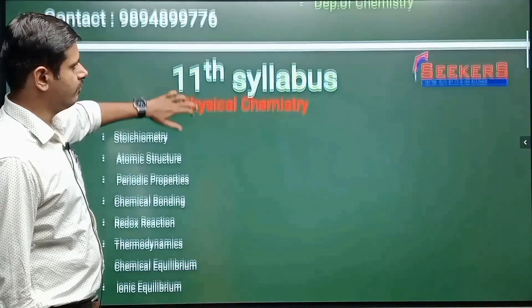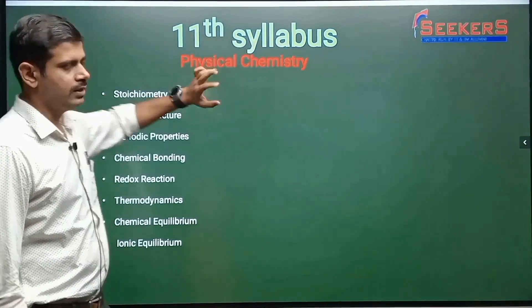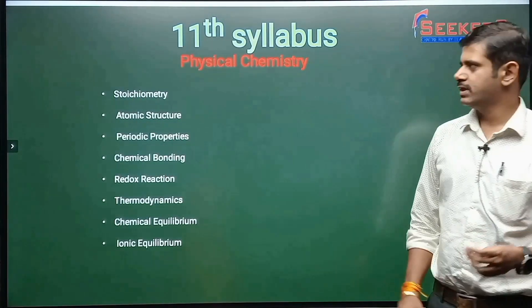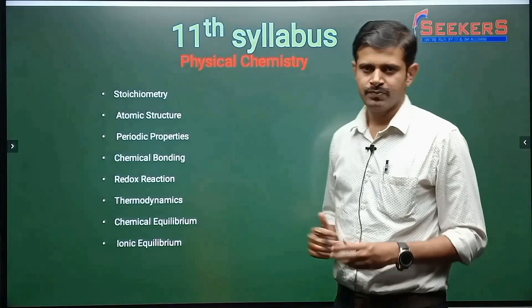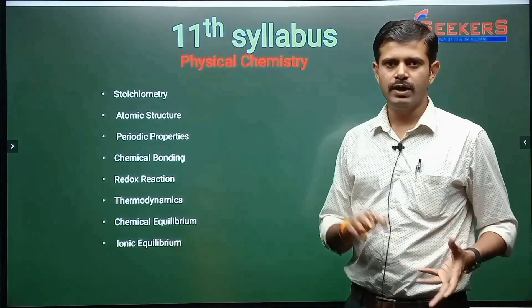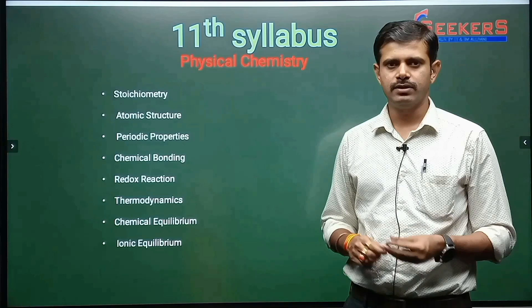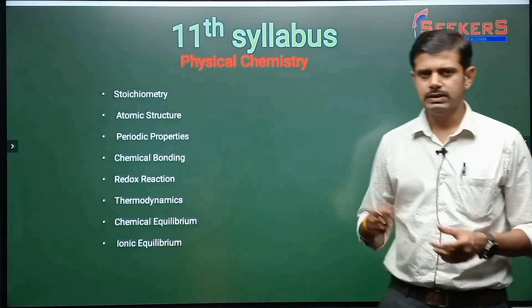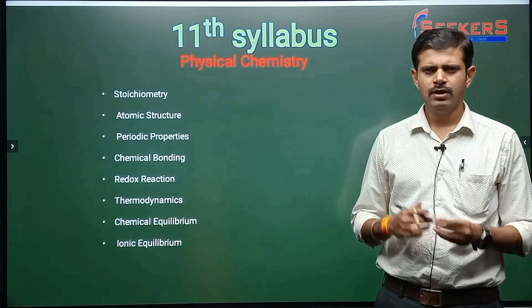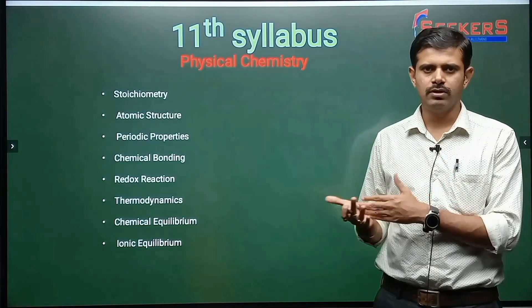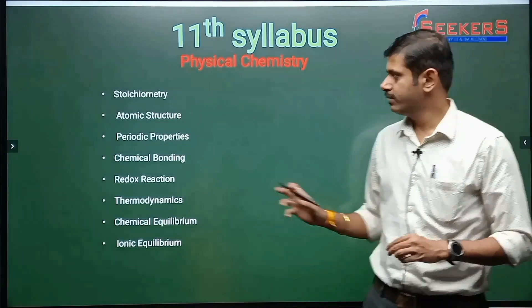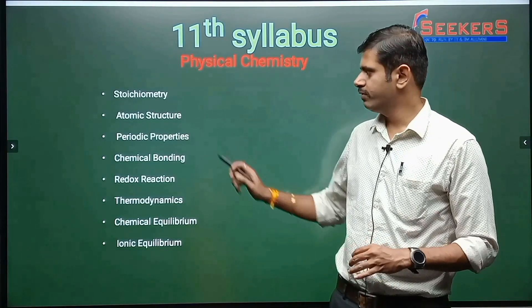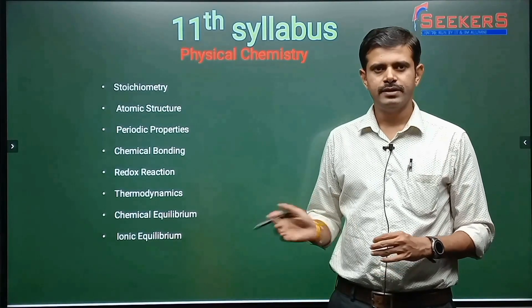The very first thing we'll be going with in our crash course is physical chemistry. The first chapter covers basics of chemistry — stoichiometry, molarity, molality, normality, atomic number, atomic mass, neutrons, electrons, protons. We'll be covering all these things in the first chapter, calculating atoms, molecules, and everything.